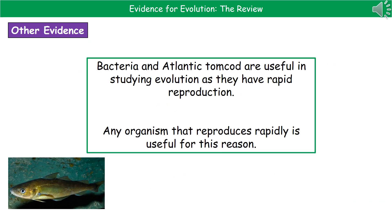If we actually want to study evolution in a lab setting, there are a couple of organisms that are really useful to us. Bacteria and the Atlantic tomcod are actually really useful because they've got very fast reproductive rates, which means we can see how these features are being passed on in a much shorter time frame than we would with, say, a cat or a dog.